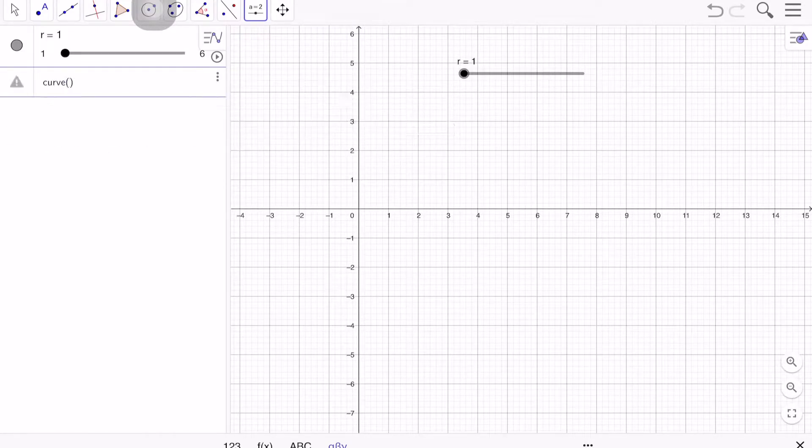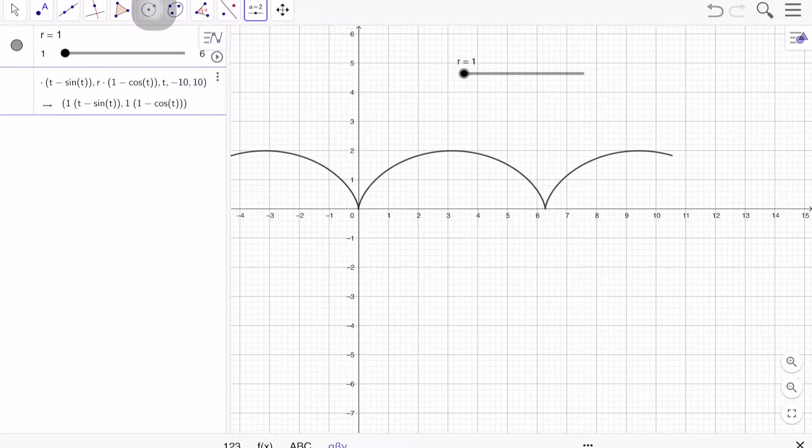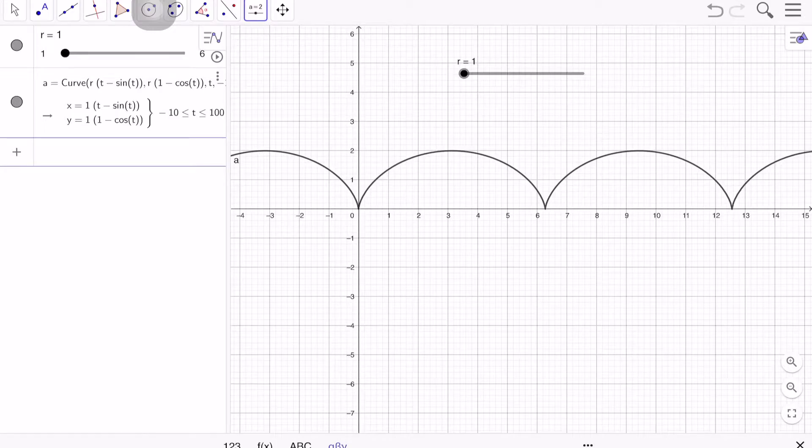So what are we going to do with that slider? We're going to type the word curve here, and I'm going to write R times, and the X function of this parametric curve is defined by T minus sine T, and the Y portion is defined by R times 1 minus cosine T, and our parameter is T, and let's go from negative 10 to 100. I just want this to go on and on.